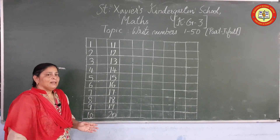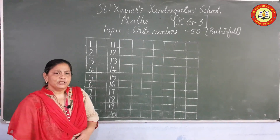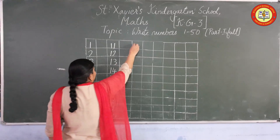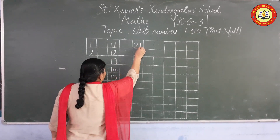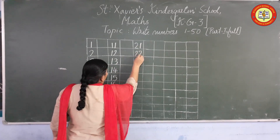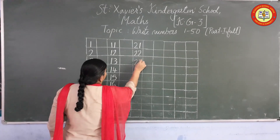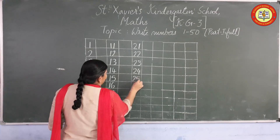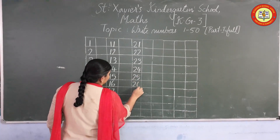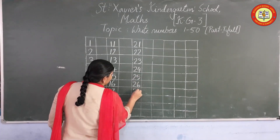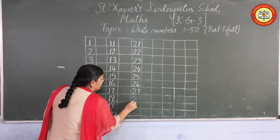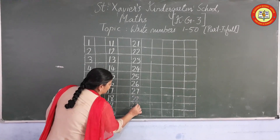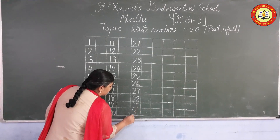20. Finish writing up to 20? Okay. Then write 21, 22, 23, 24, 25, 26, 27, 28, 29, 30.